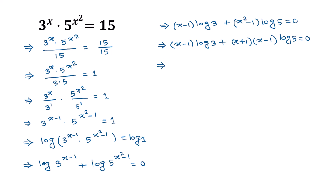Taking (x minus 1) as common factor, we get: (x minus 1) times [log 3 plus (x plus 1) times log 5] is equal to 0.